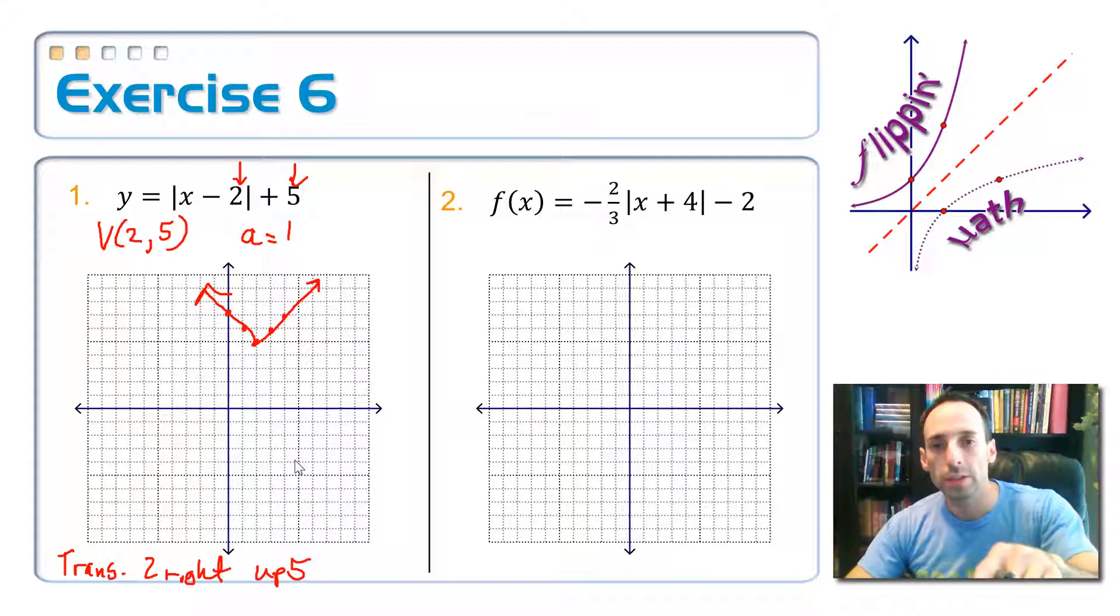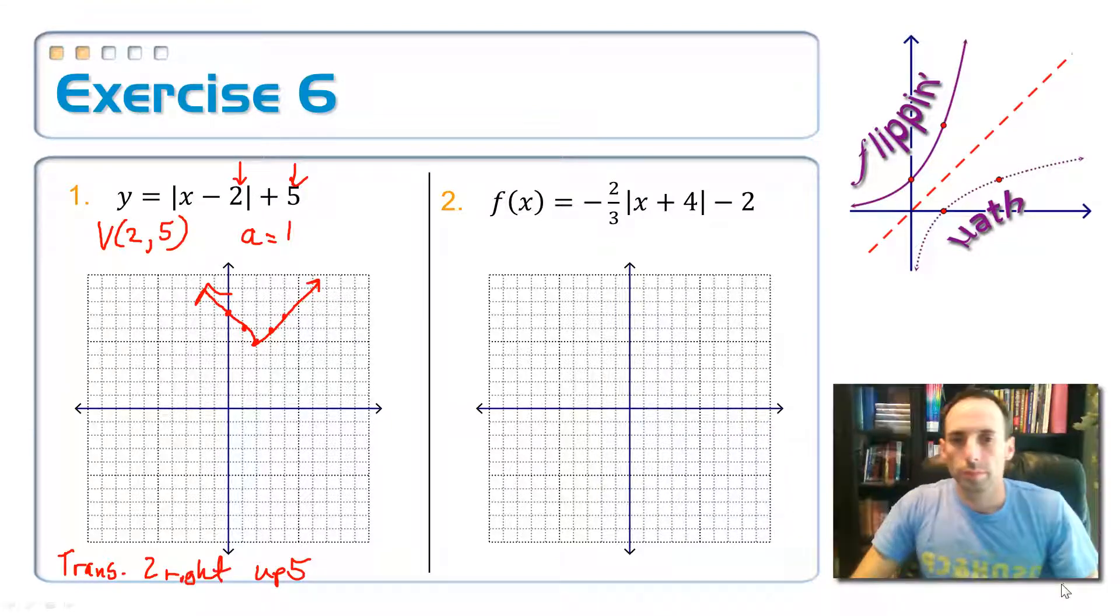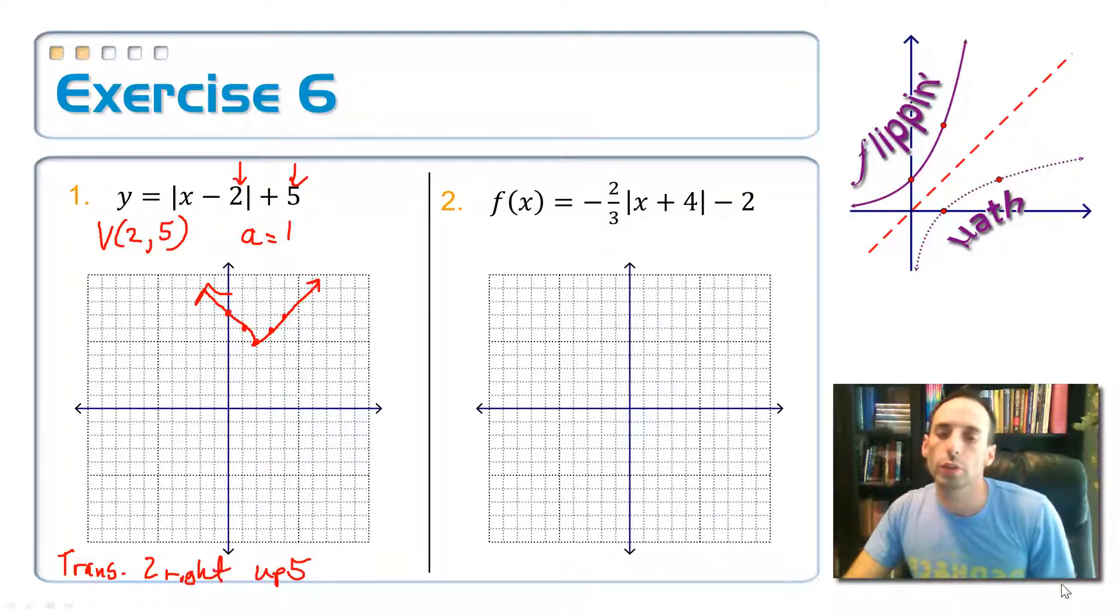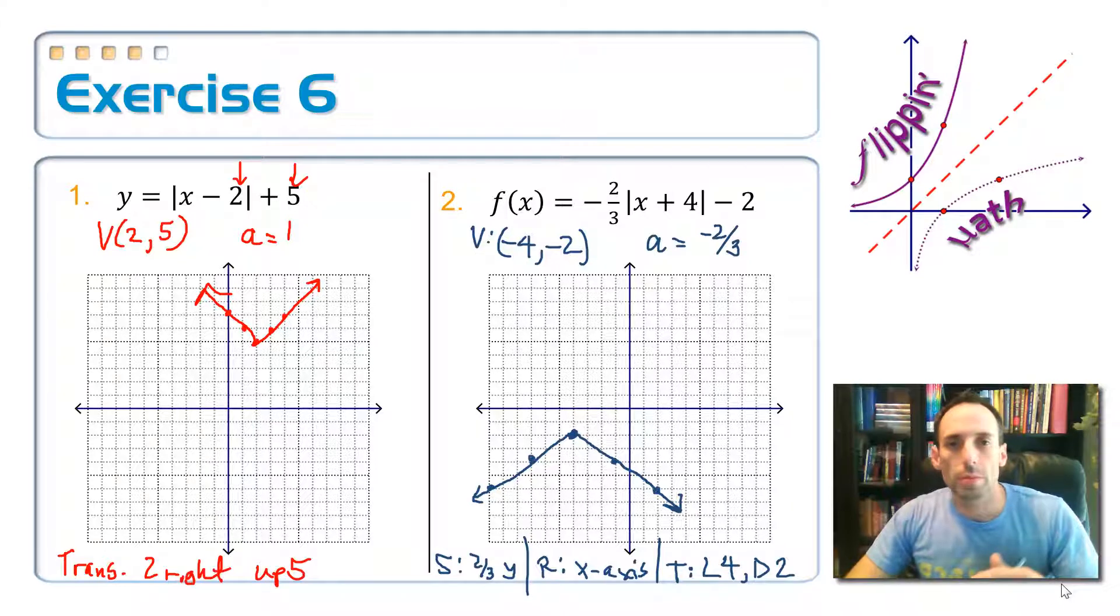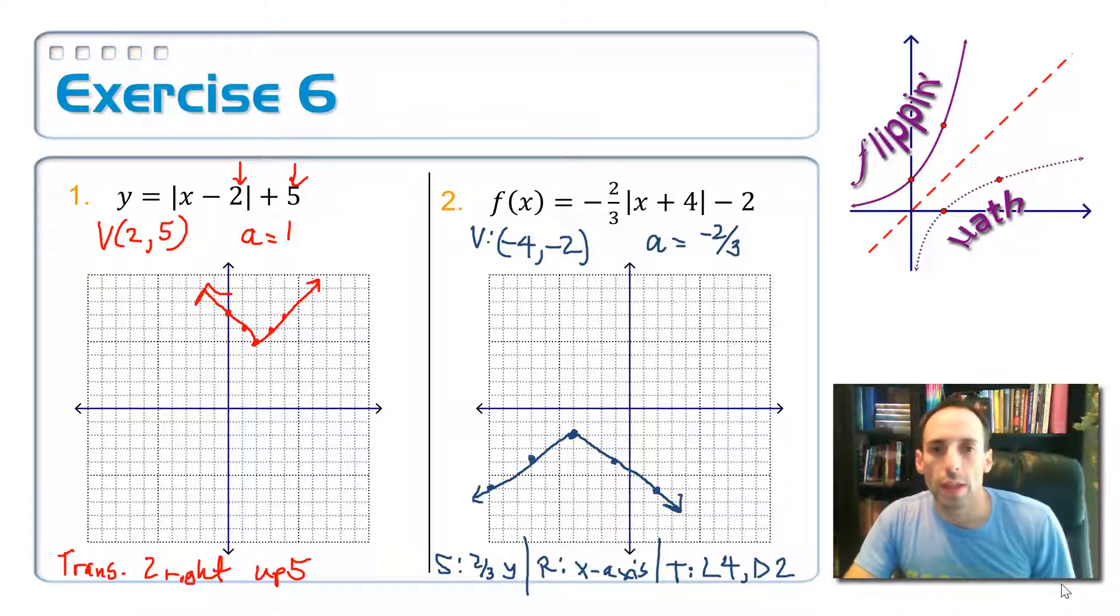I want you to take a moment on some graph paper, and I want you to try to do the same kind of thing on that second equation. Pause the video. Alright, let's see how successful you were at graphing that thing. So here's my graph. I would first start by finding the vertex. And the vertex is negative 4, negative 2, because the 4 is lying to you, but the negative 2 is not. So I'll plot that as a point. There's my vertex point.